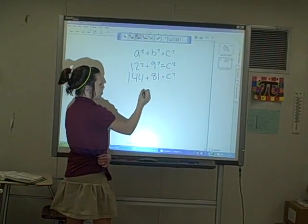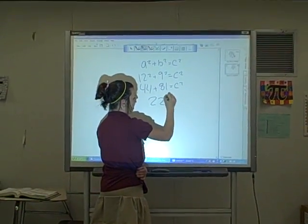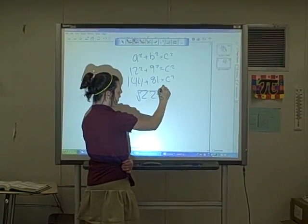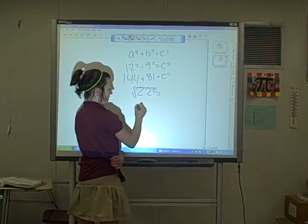c squared, that is 225, and then you square root, and that is 15.